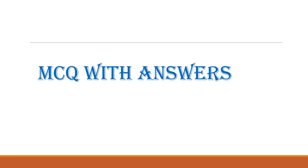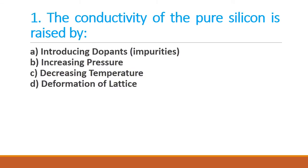Now let us discuss some important multiple choice questions related to this topic. First question: the conductivity of pure silicon is raised by — adding dopants or impurities into it. Option A is the right answer.